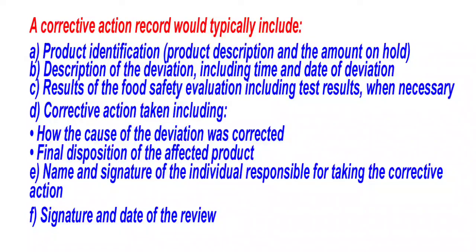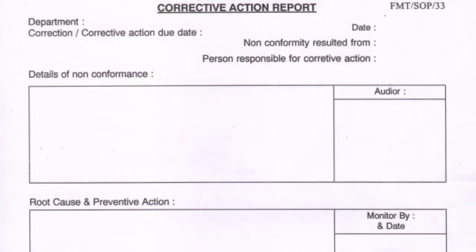The documentation requirements for corrective actions — a corrective action record would typically include: product identification including product description and amount on hold; description of the deviation including time and date; results of the food safety evaluation including test results when necessary; the corrective action taken including how the cause of the deviation was determined; final disposition of the affected product; and the name and signature of the individual responsible for taking corrective actions, along with the signature and date of the reviewer.